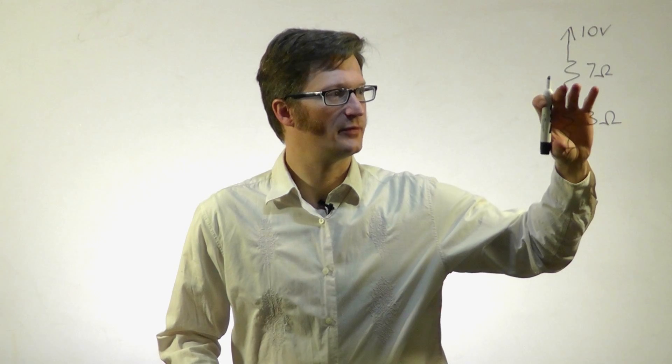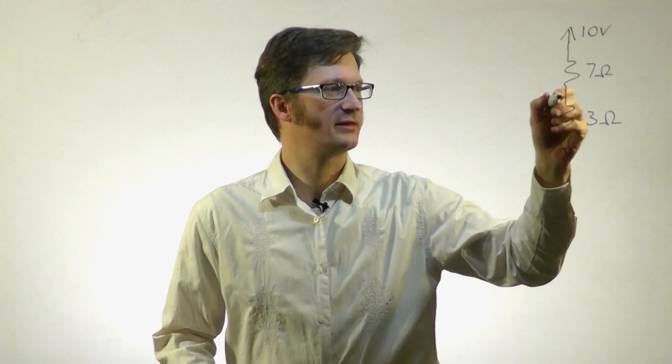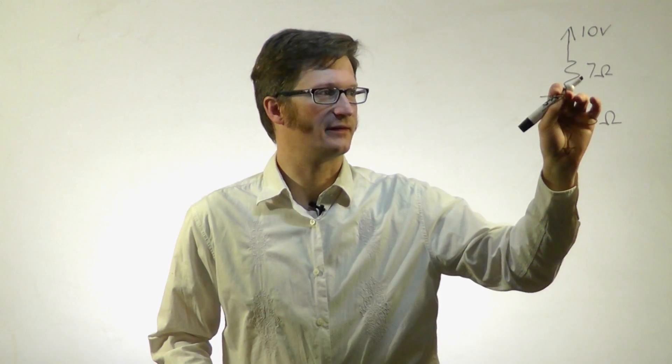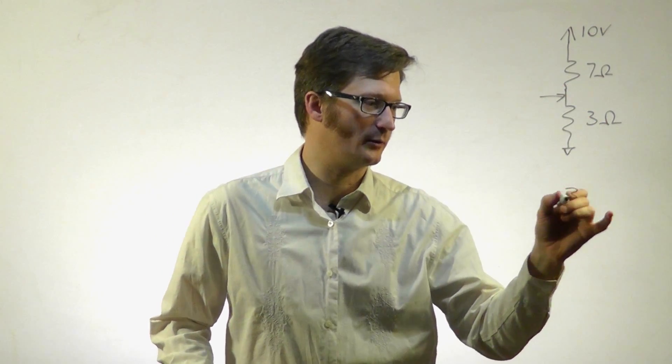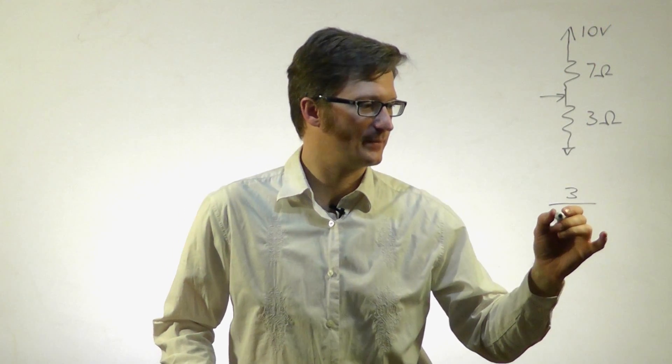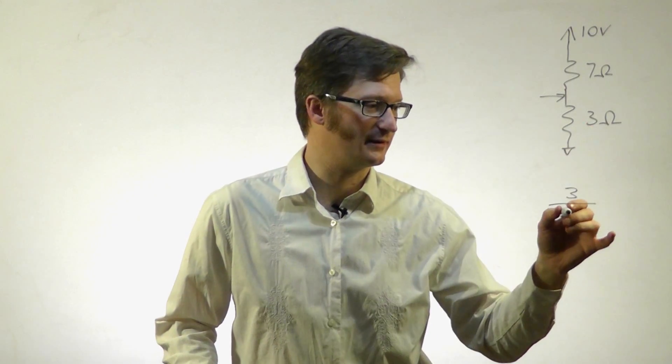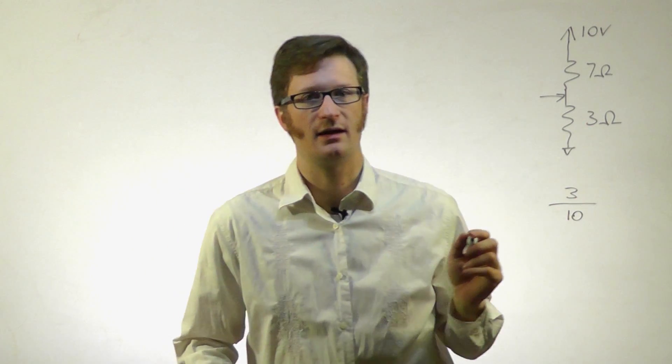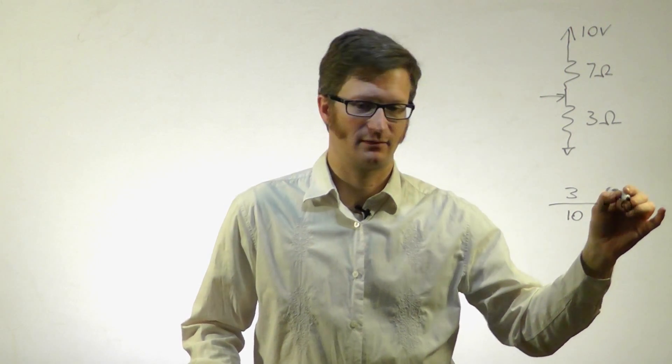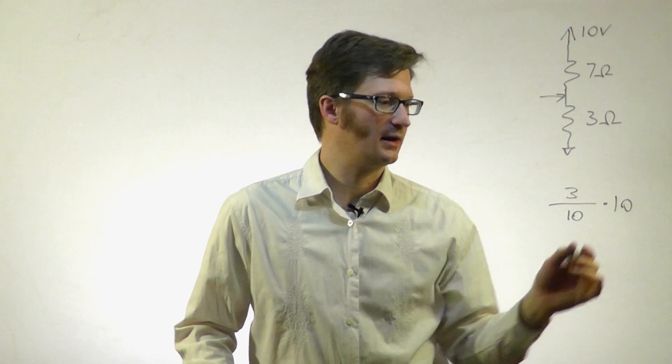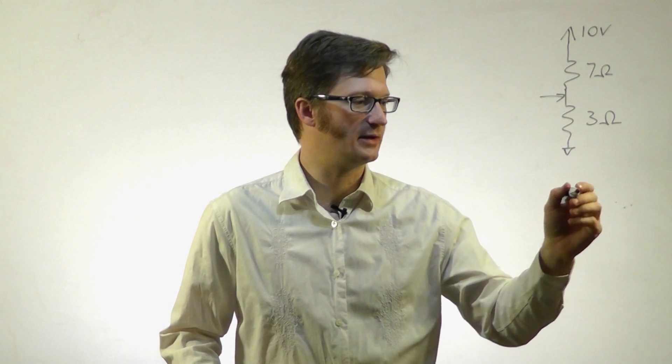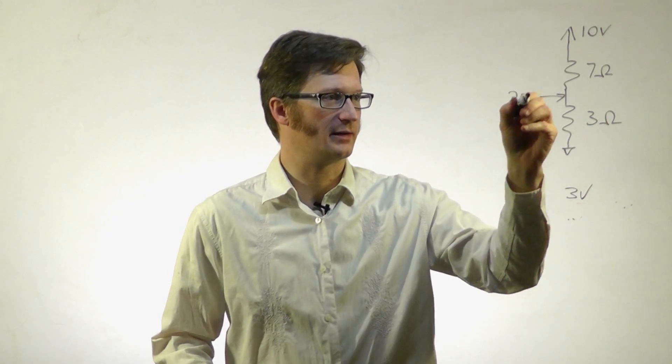If I want to find the voltage from ground to this point right here, I take the total resistance up to that point, so that's 3 ohms, divided by the total resistance of the whole chain. That's 7 plus 3 equals 10. Then I multiply that by the voltage. The tens cancel out, and we're left with 3 volts right there.